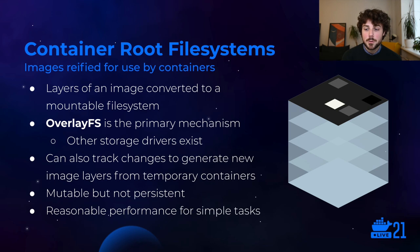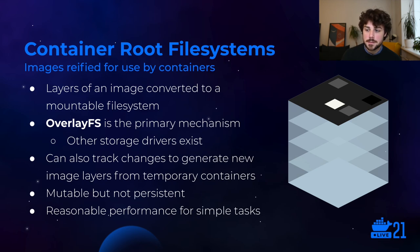Container root file systems are mutable but not persistent — they have pretty good performance and it's reasonable for most tasks. But they don't live past the end of the container, except in the snapshot case just described. In general, they're good for simple tasks, probably not good for generating large build products or things that you want to persist after the container exits.